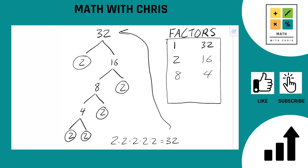The last thing we always have to do is come down to the prime factors and see if there's any other combination of these numbers you can multiply together to give you something that hasn't been banked yet. 2 times 2 is 4 — we already got that. 2 times 2 times 2 is 8 — already got that. 2 times 2 times 2 times 2 is 16 — already got that. So we're done.